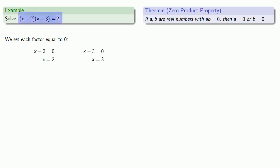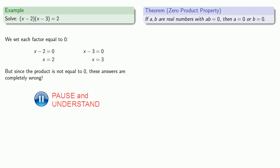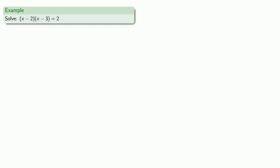But since the product is not equal to zero, these answers are completely wrong. And the problem is, this is not a product equal to zero, so we can't use the zero product property. And since this is not a product equal to zero, we should do a little algebra to try and rewrite this as a product equal to zero.